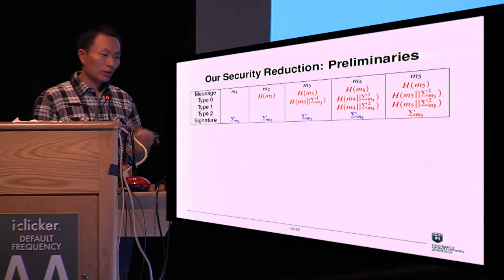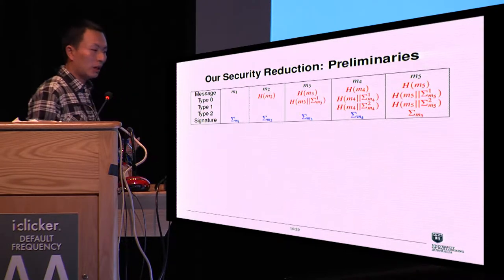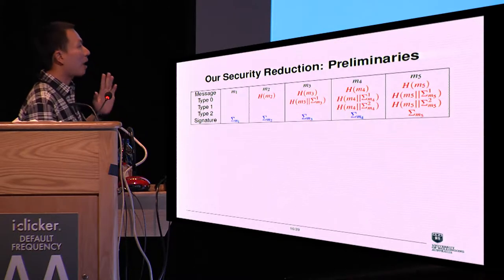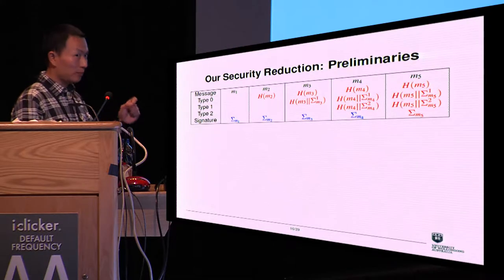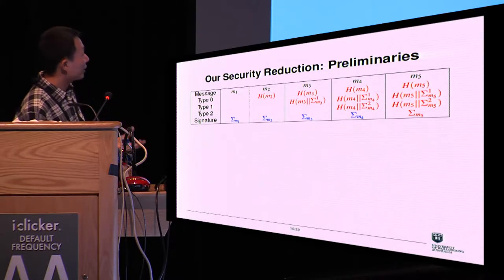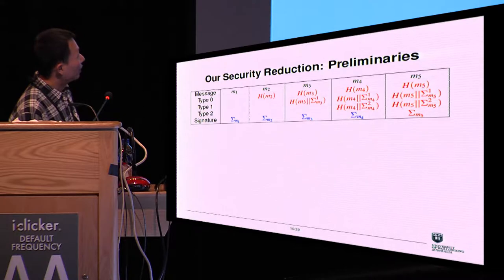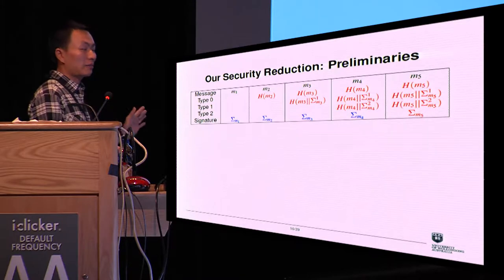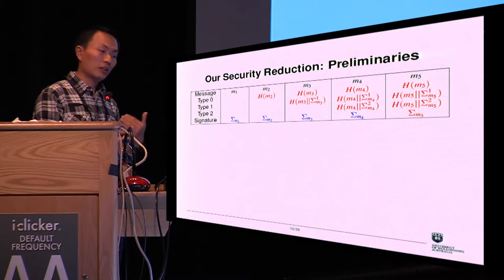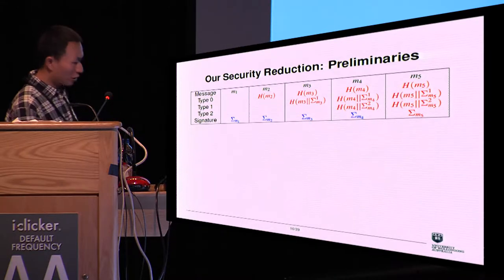Before proceeding, let me give some preliminaries about the security reduction. We define three types of hash queries made by the adversary: type 0, type 1, and type 2. Type 0 means the hash query input has message only, without block signatures. Type 1 means the hash query input has message concatenated with its first block signature. Type 2 means the hash query input has message concatenated with the first two block signatures. The adversary could make other hash queries not in these three types, but they are not relevant to the security reduction.